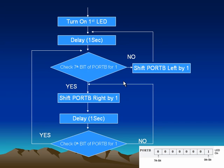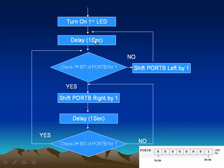Let's see the steps to implement the Knight Rider LED pattern. We are going to use Port B of the PIC16F84A microcontroller. According to the flowchart, the first step is to turn on the first LED — we set the 0th bit of Port B to one, meaning the first LED connected to Port B is turned on. After the first LED is turned on, we need a delay of one second, which you can change by modifying the values in the C code.